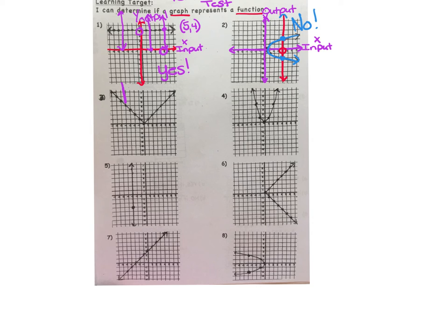For number 3, no matter where you decide to drop that vertical line it only strikes the graph of the absolute value function once. So yes this is a function.